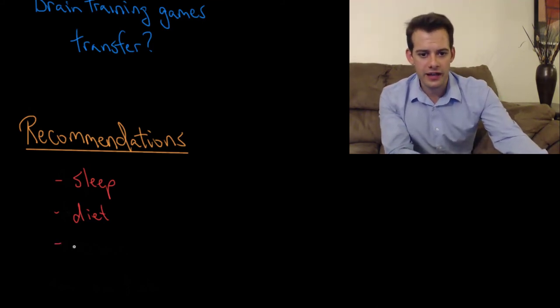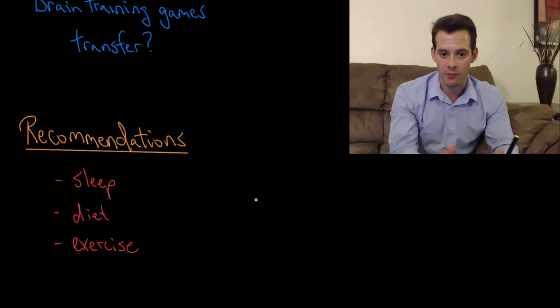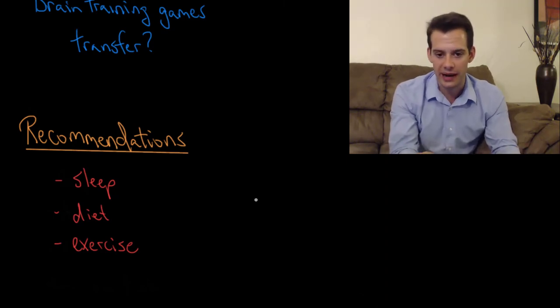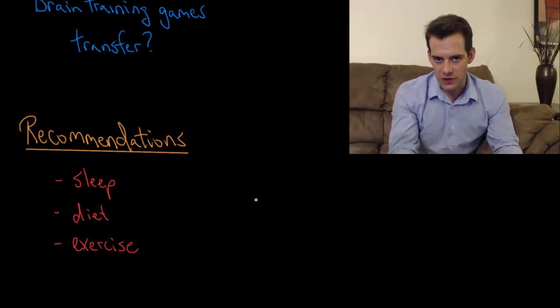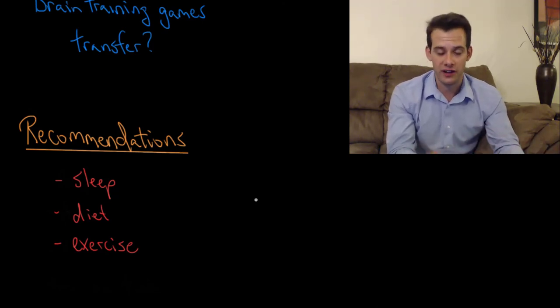Third is exercise. So exercise has been demonstrated to stave off cognitive decline and it can help to improve your cognitive performance. And part of this is that your brain needs oxygen and exercising basically improves the efficiency of your body's ability to deliver nutrients where they need to be, including in your brain. So exercise helps with that and it also can help you to get better quality of sleep. So that relates back. So these are things that you can do. They don't really involve any special equipment or apps that you need to download. These are all things that you can start implementing right away and that are associated with improved cognitive performance.